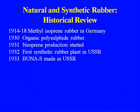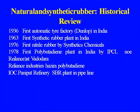The development of synthetic rubber accelerated during World War I and World War II due to rising demand, which also drove development in the chemical industry broadly. In 1930, organic polysulfide rubber was developed; neoprene production started in 1931; in 1932, the first synthetic rubber plant was set up in the US and USSR. In 1936, the first automatic tire factory by Dunlop started in India. In 1963, the first synthetic rubber plant in India was started by Synthetic Chemicals at Bareilly - the first non-petrochemical route plant.